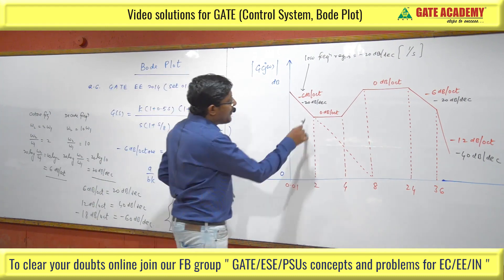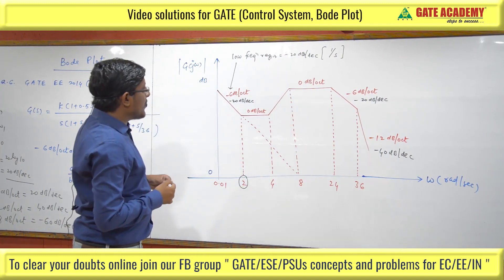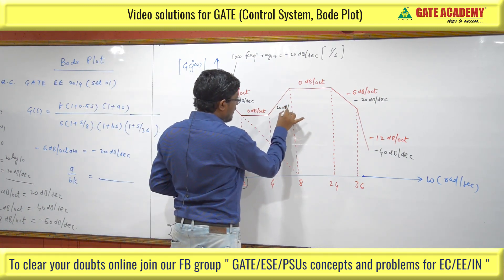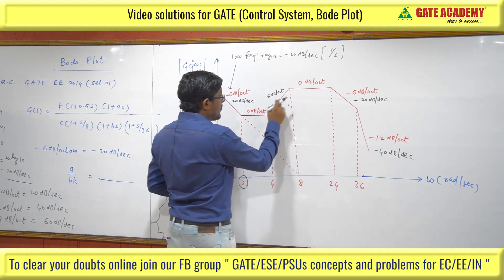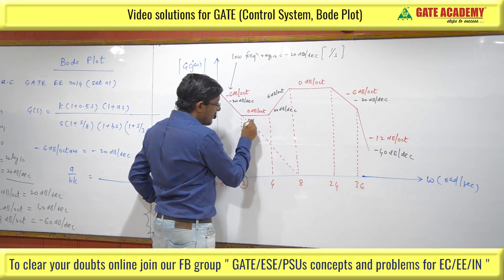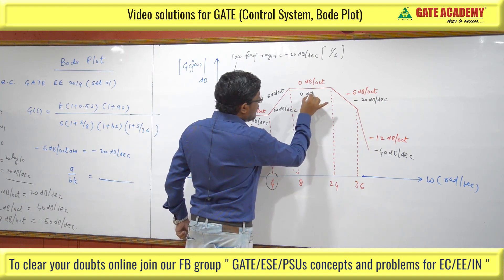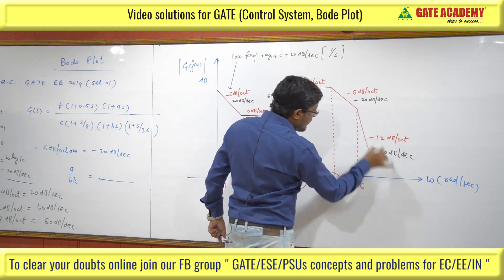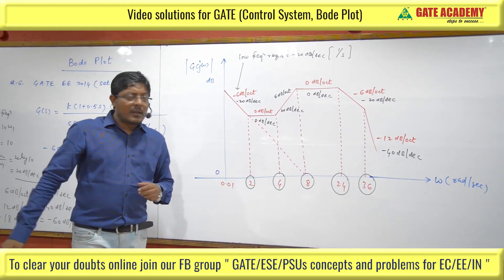Looking at the Bode plot: starting at minus 20 dB per decade, then zero dB per decade at a corner frequency, then zero, then 20 dB per decade — that was written as 6 dB per octave in the question, meaning 20 dB per decade. Then again zero dB per decade, then corner frequency at 8, then minus 20 dB per decade, then minus 40 dB per decade. The overall corner frequencies are: 2, 4, 8, 24, and 36 radians. There are five corner frequencies.